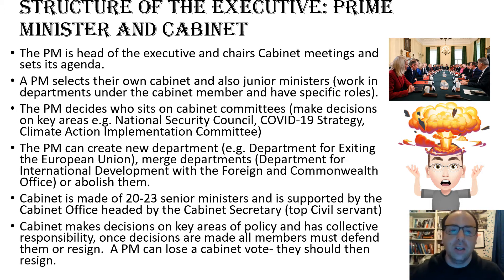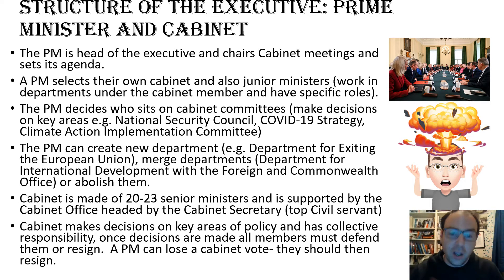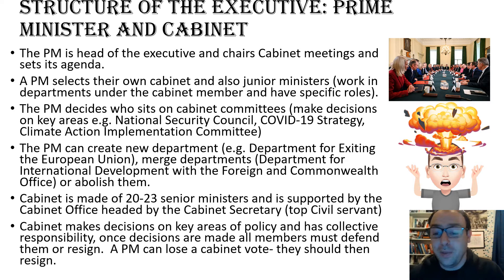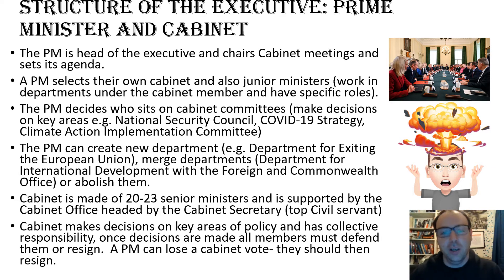The structure of the executive starts with the Prime Minister and Cabinet. The Prime Minister is the head of the executive or chief executive. They chair cabinet meetings and set the agenda. The cabinet is selected by the Prime Minister, as are the junior ministers who work in the different departments under cabinet members. The Prime Minister therefore has incredible power of patronage, helped by the whip's office to make these decisions.